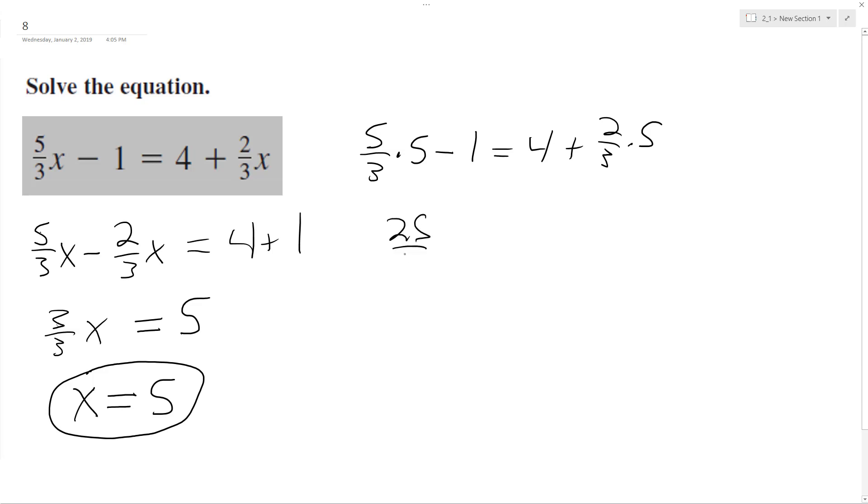We end up with 25/3 minus 1 equals 4 plus 10/3. This becomes 25 minus 3 over 3 equals 12/3 plus 10.